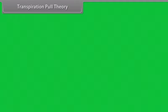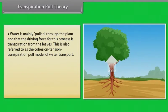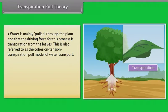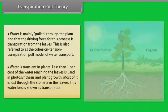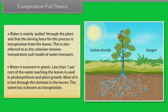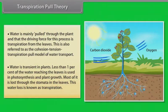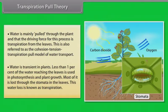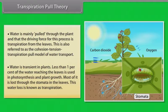Transpiration pull theory. Most researchers agree that water is mainly pulled through the plant and that the driving force for this process is transpiration from the leaves. This is also referred to as the cohesion-tension transpiration pull model of water transport. Water is transient in plants. Less than 1% of the water reaching the leaves is used in photosynthesis and plant growth. Most of it is lost through the stomata in the leaves. The water loss is known as transpiration.